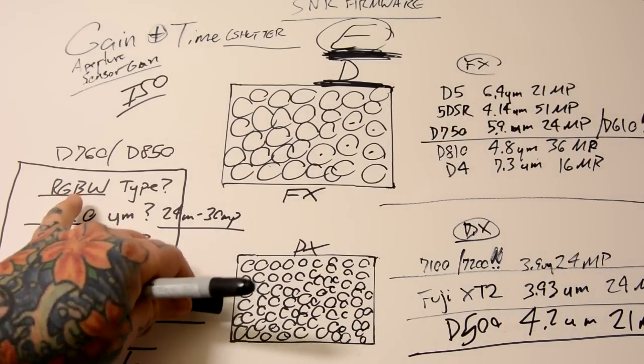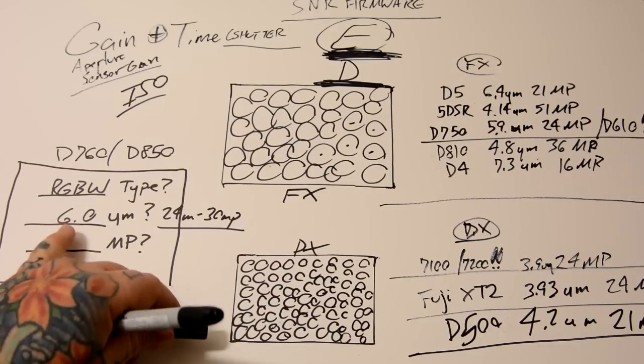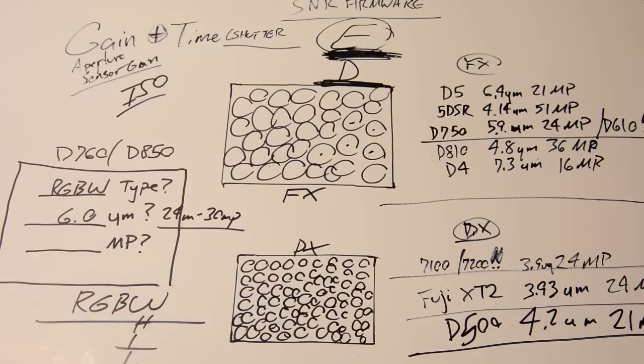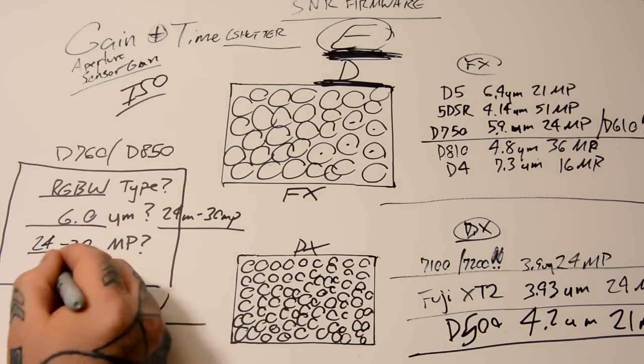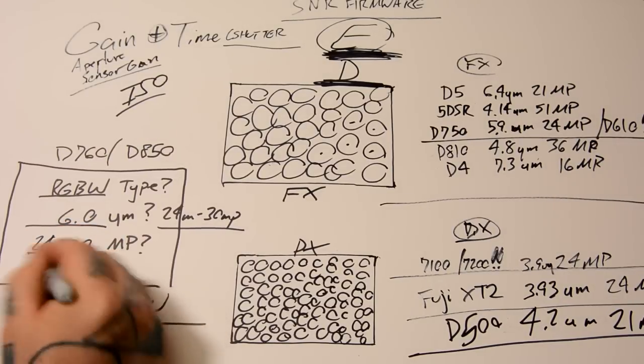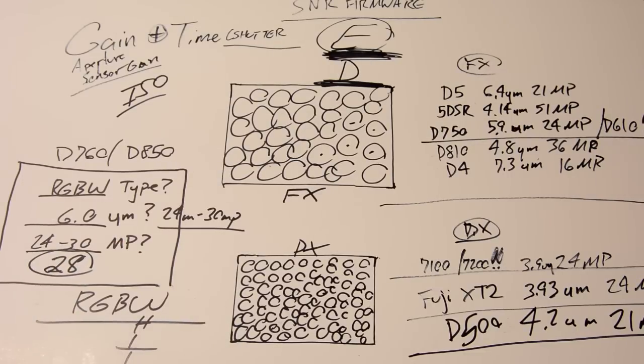So now we know that the new sensor is going to be RGBW. It's going to be right at 6 micrometer pixel pitch, plus or minus 0.3. What's the megapixel going to be? Like I said, right now, 24 megapixel to 30. Likely it's going to be, from what I have gathered, 28 megapixels.